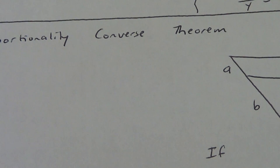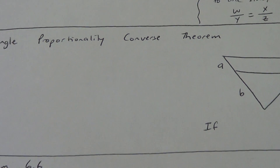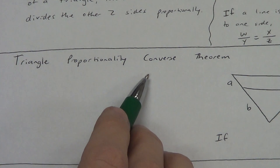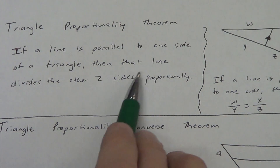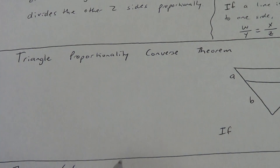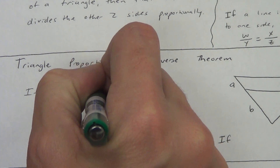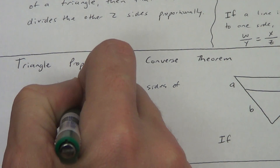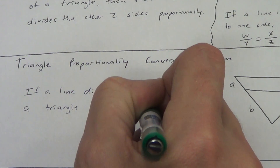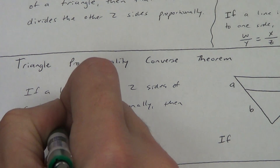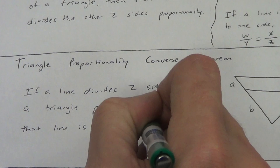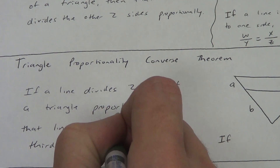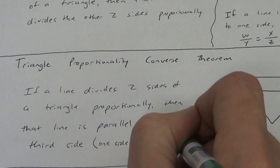The second one is the Triangle Proportionality Converse Theorem. Remember, the converse just switches the order. The original said: if a line is parallel, then the sides are divided proportionally. So this one says: if a line divides two sides of a triangle proportionally, then that line is parallel to the third side — the one side it doesn't intersect.